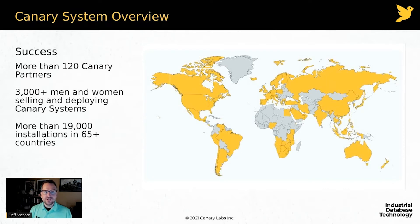We have more than 120 successful partners within the Canary ecosystem — that's over 3,000 men and women that sell, deploy, and assist in supporting Canary systems. Through that network, we've enjoyed more than 19,000 installations and are currently operating in more than 65 countries around the globe.